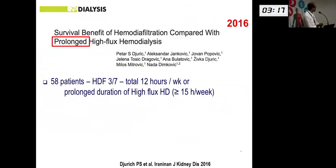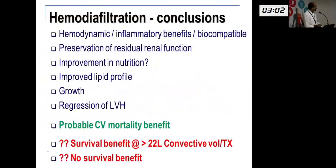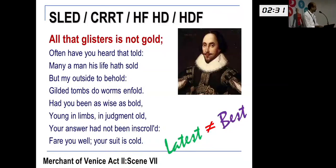An interesting study compared prolonged high-flux hemodialysis with hemodiafiltration and found that if you do it for a long time — 12 hours, more than 15 hours per week — they were actually quite equivalent. Although there are many theoretical and experimental benefits including improved nutrition, the cardiovascular mortality signal is probably the only thing consistently shown, and there may be a survival benefit above 22 liters convective volume per treatment session. Probably there is no survival benefit overall. As Shakespeare wrote in the Merchant of Venice: 'All that glisters is not gold.' The latest may not always be the best.